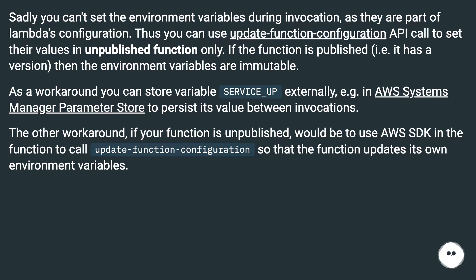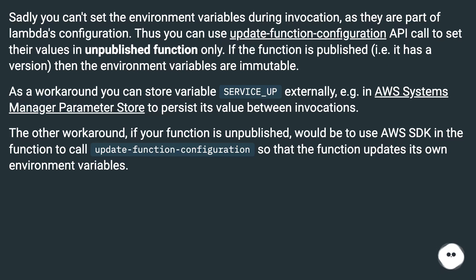As a workaround, you can store the variable `service_up` externally — for example, in AWS Systems Manager Parameter Store — to persist its value between invocations. The other workaround, if your function is unpublished, would be to use the AWS SDK in the function to call update function configuration so that the function updates its own environment variables.